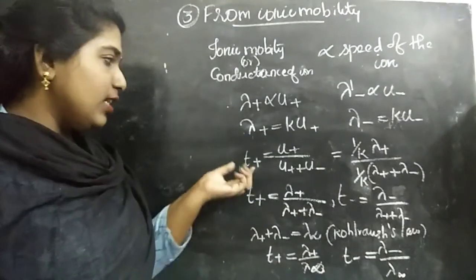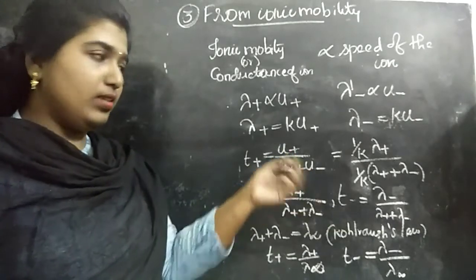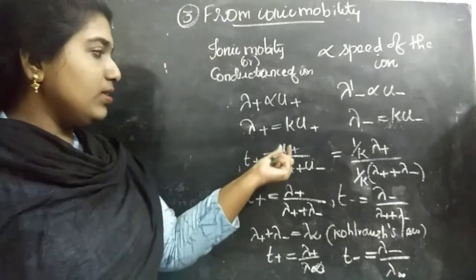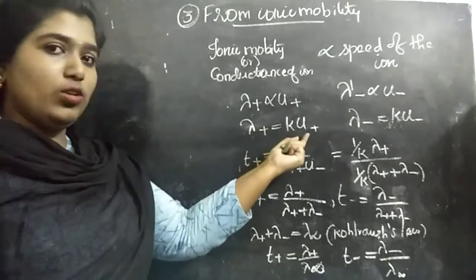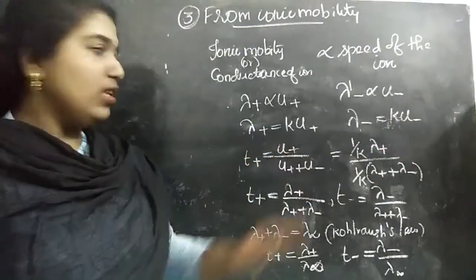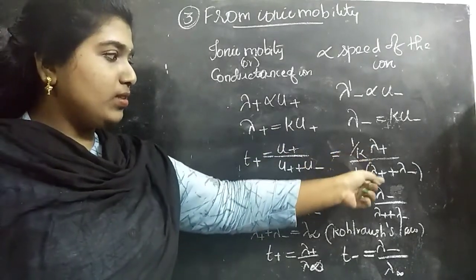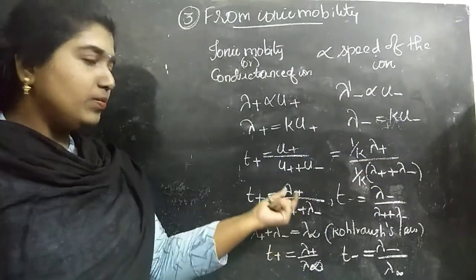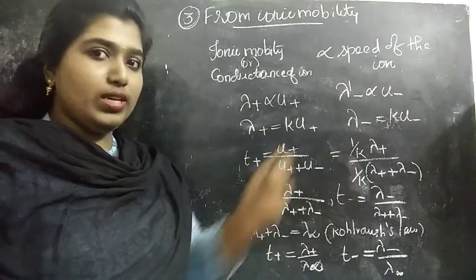Now we know that the transport number for a cation is U+ by U+ plus U-. That is the speed of the cation with the total speed. Replacing this U+ with 1 by K into lambda+, we are arranging this to get U+ value and U- value. We are substituting those here. 1 by K into lambda+ divided by 1 by K is taken as common, and lambda+ plus lambda-. For T+ you can write lambda+ by lambda+ plus lambda-.